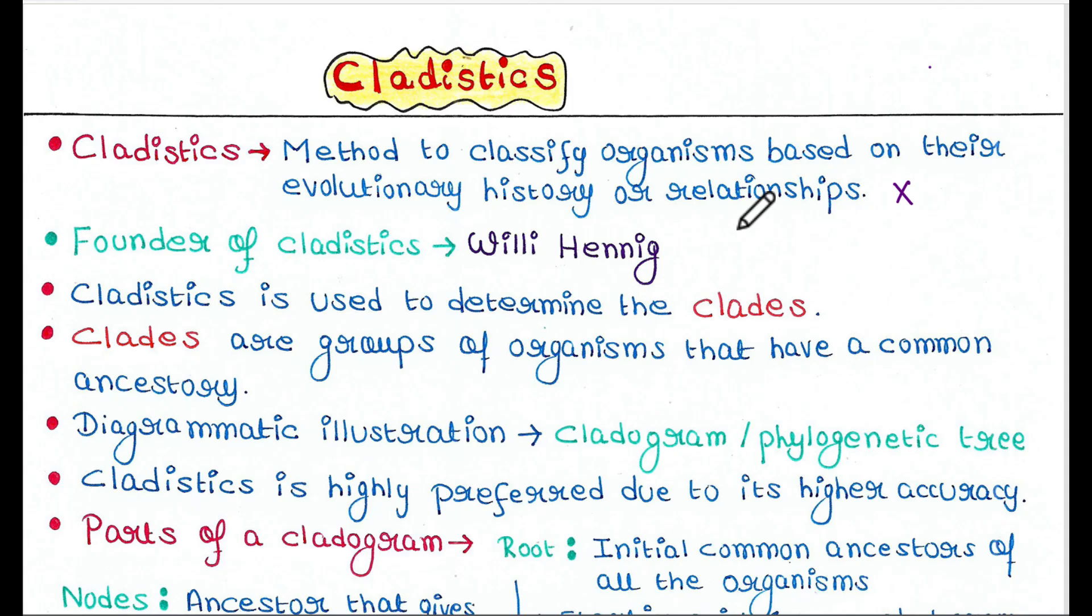Suppose you find that organism X has similarity with Y. Now you can check how much similar they are and what was their common ancestor. Suppose the common ancestor was Z. From Z, X and Y got separated. In this way, you can work.